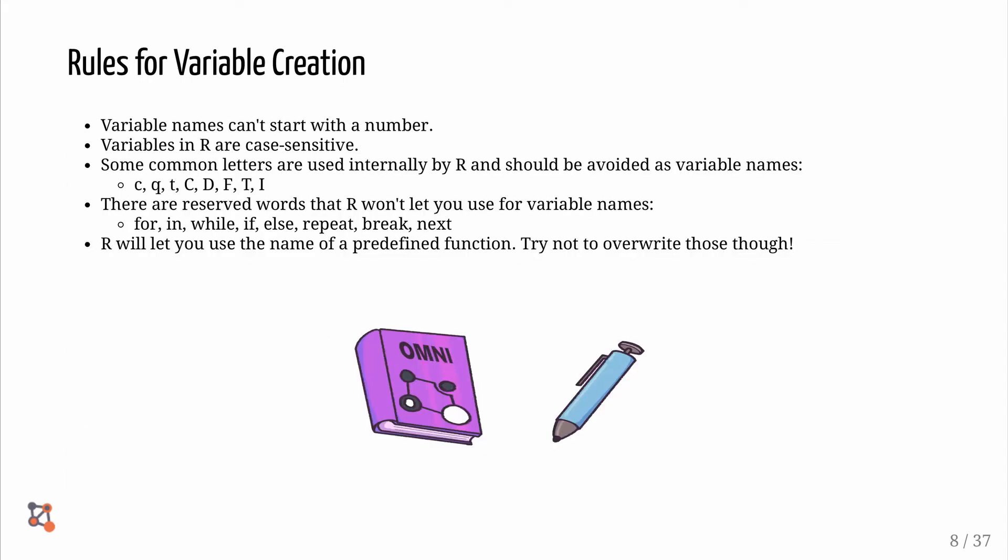There are a few rules for variable creation. Variable names cannot start with a number. Variables in R are case-sensitive. Some common letters are used internally by R and should be avoided as variable names. These include lowercase c, q, and t, and uppercase C, D, F, T, and I. There are reserved words that R won't let you use for variable names. These include for, in, while, if, else, repeat, break, and next. R will let you use the name of a predefined function, but try not to overwrite these.